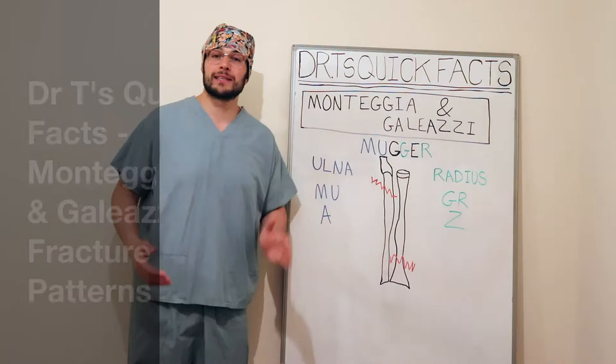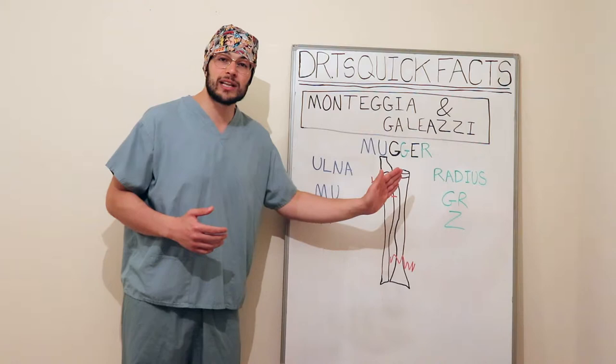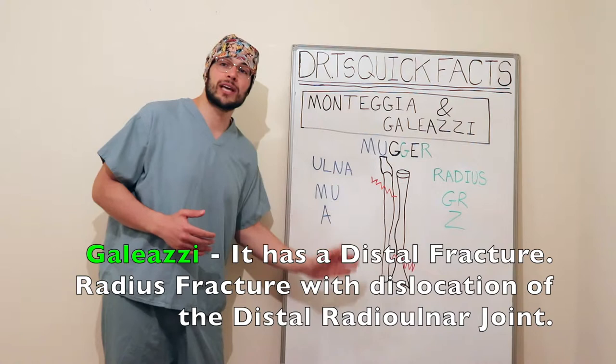The Monteggia fracture affects the ulna bone in the proximal aspect and there is a dislocation of the radial head, whereas the Galeazzi fracture affects the radius at the distal end and involves dislocation of the distal radioulnar joint.